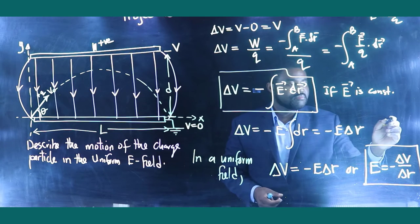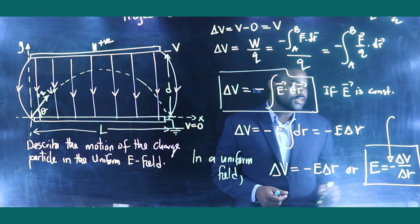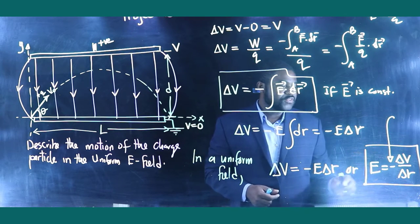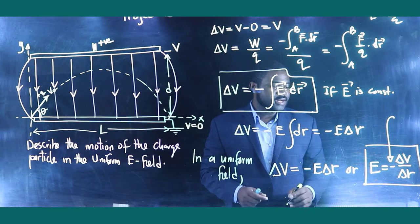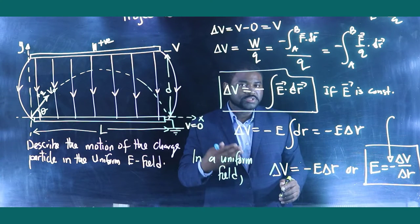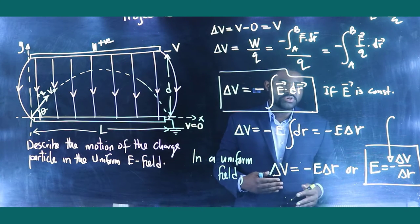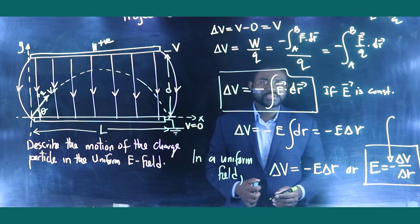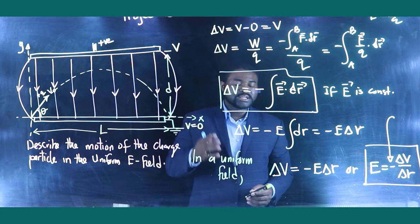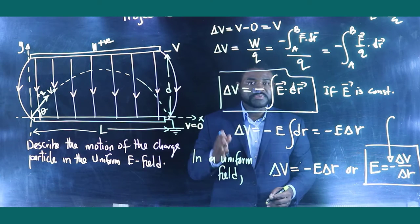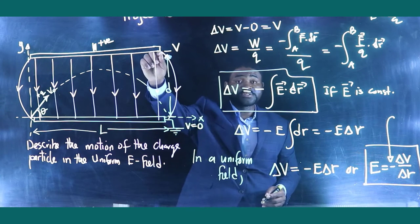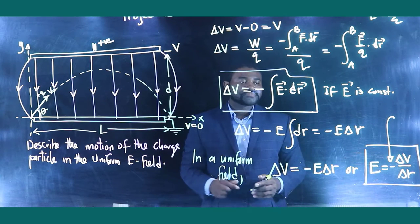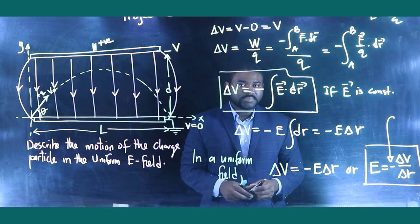But what is the meaning of this negative sign? This negative sign basically implies that the electric field always points towards the direction of lower potential. In other words, the electric field line will always be directed from a higher potential to a lower potential. So keep that in mind.